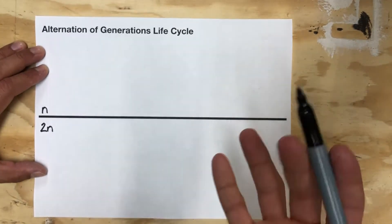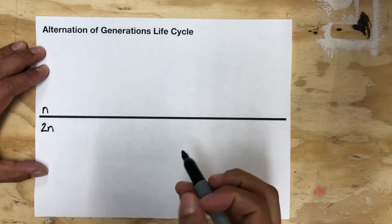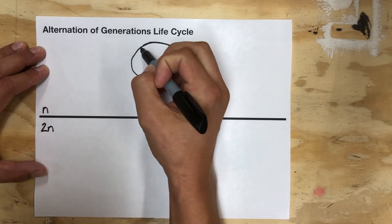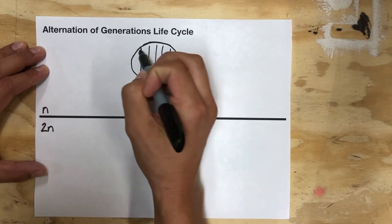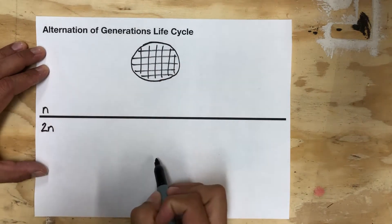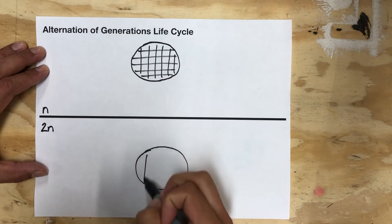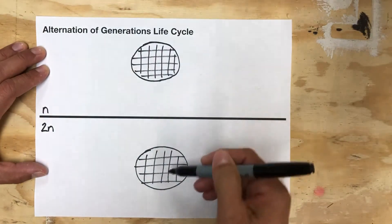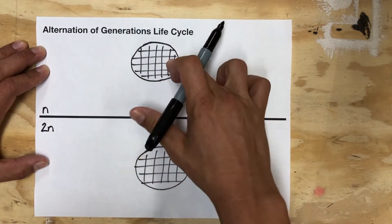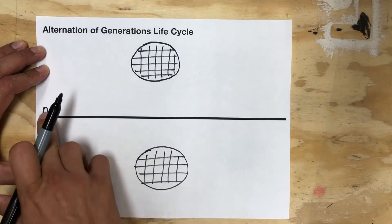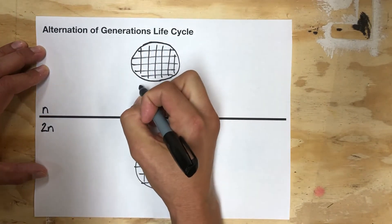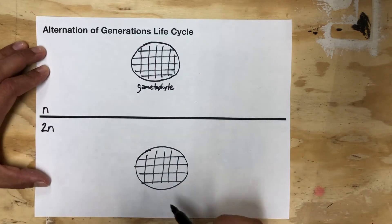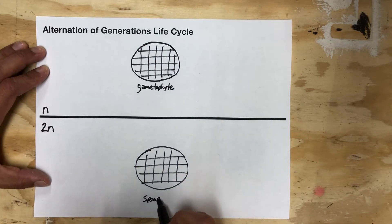Since it's an alternation of generations life cycle, we have two generations, and those generations are the multicellular stages of the life cycle. I'm going to use a checkerboard to indicate multicellular. Since the top one is haploid and multicellular, this is the gametophyte, and since the bottom one is diploid and multicellular, this is the sporophyte.